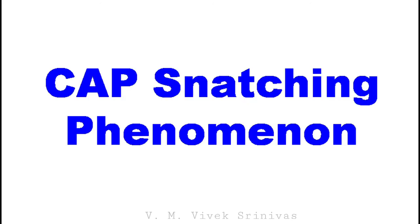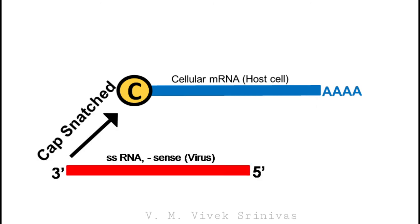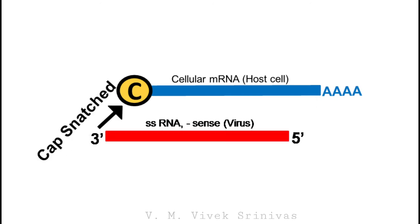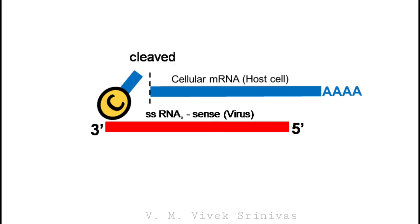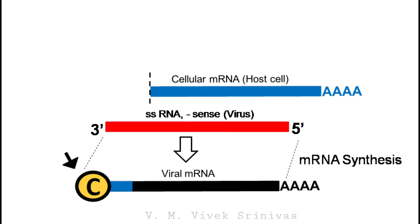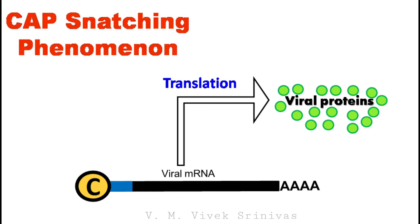Cap-snatching phenomenon. The primary transcription involves an unusual phenomenon known as cap-snatching. Here the virus snatches the 5' methyl cap from the cellular mRNA by cleaving it using endonuclease activity. This snatched 5' cap is used by the virus as a primer for transcription of viral mRNA — that is, mRNA synthesis. This synthesized mRNA is then translated for viral proteins. This type of unusual transcription seen in orthomyxoviruses is called the cap-snatching phenomenon.